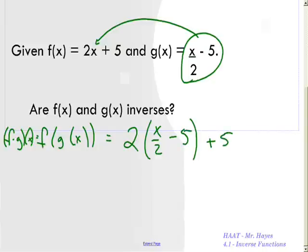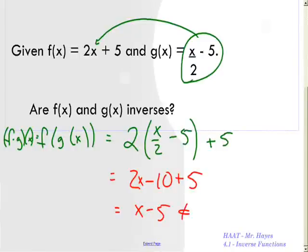So when you go through and do this, you're going to multiply this out. This becomes 2x minus 10 plus 5, or 2x, I'm sorry, minus 10 plus 5. So that's going to equal x minus 5. That's not equal to x, so not an inverse. So we're going to bring back that stuff from earlier in the year about composition of functions.